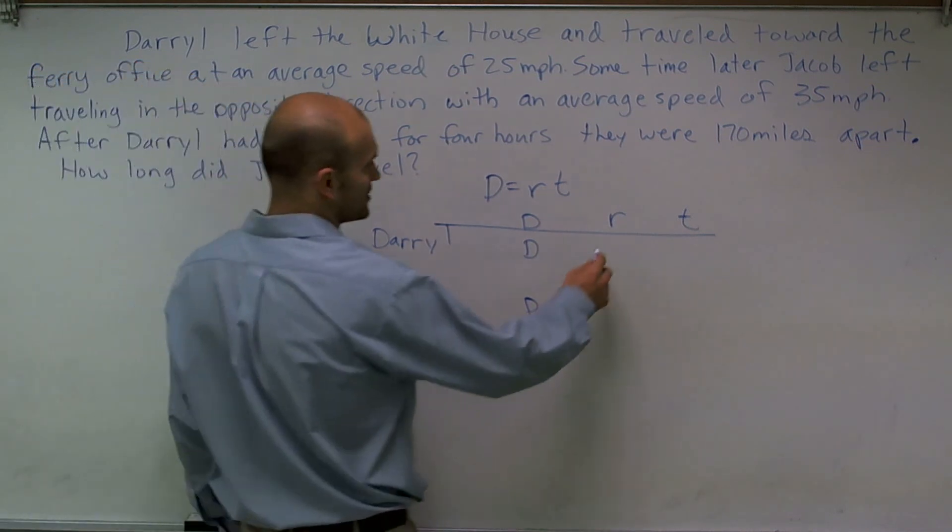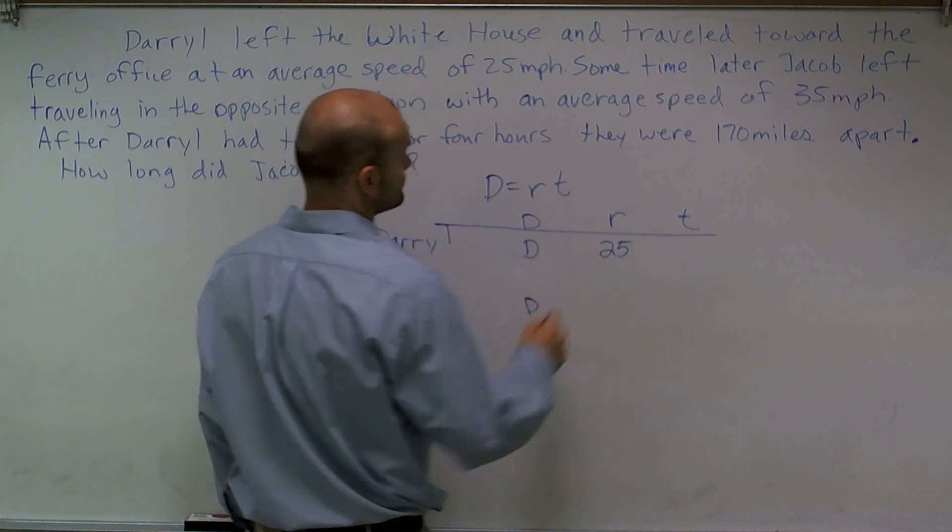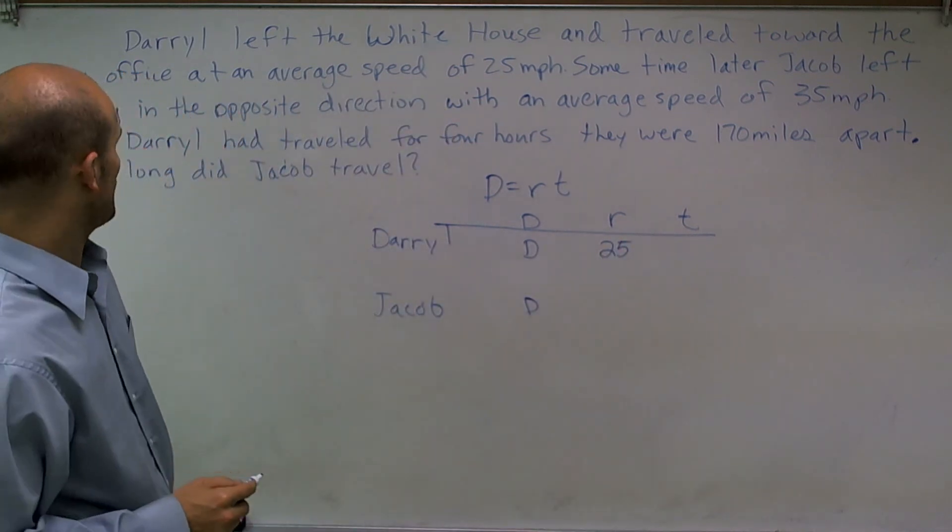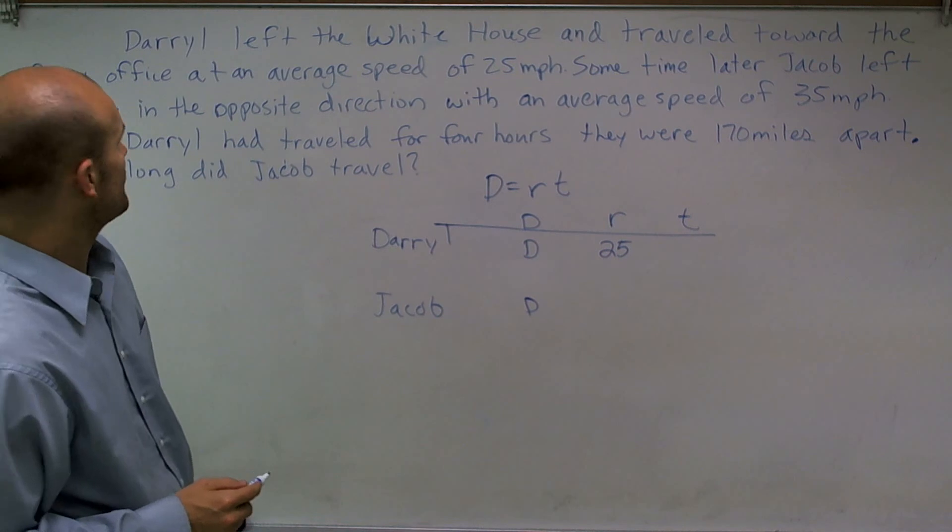The rate for Daryl was 25 miles per hour, and the rate for Jacob was 35 miles per hour.